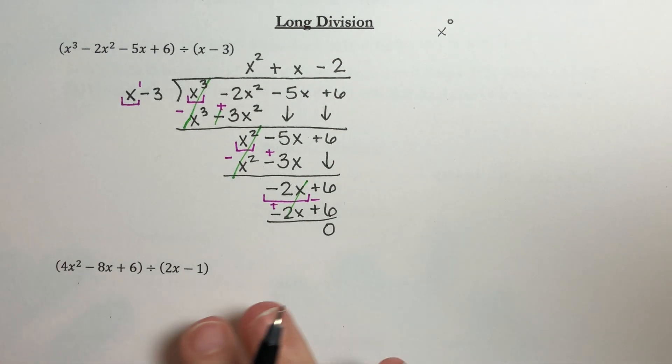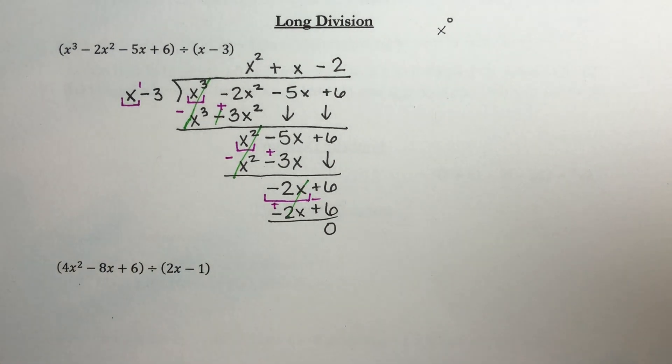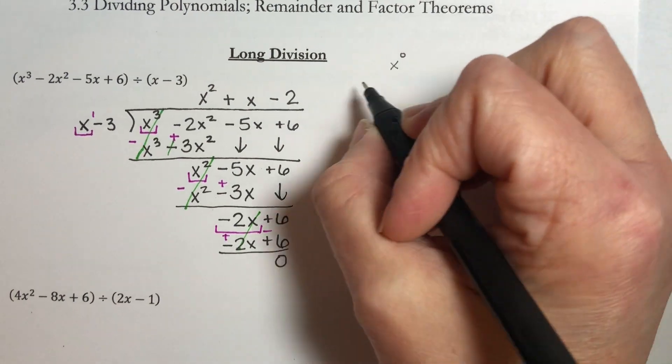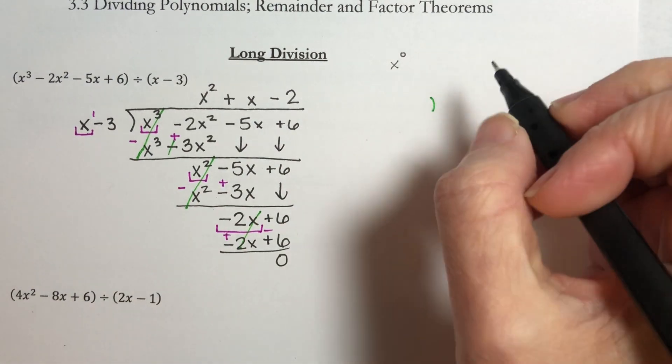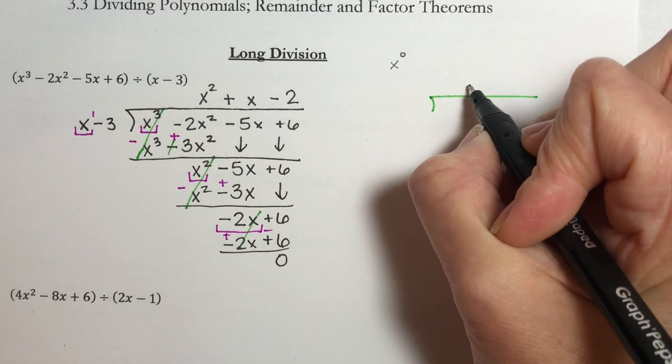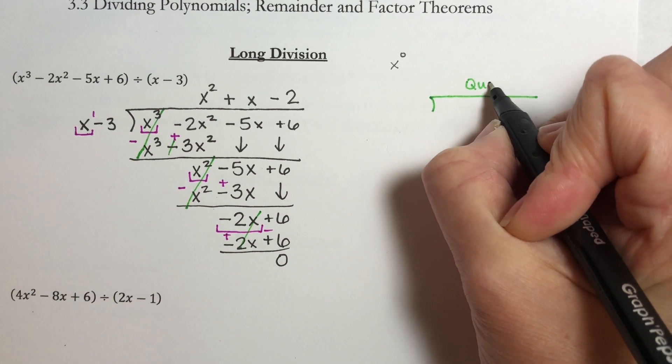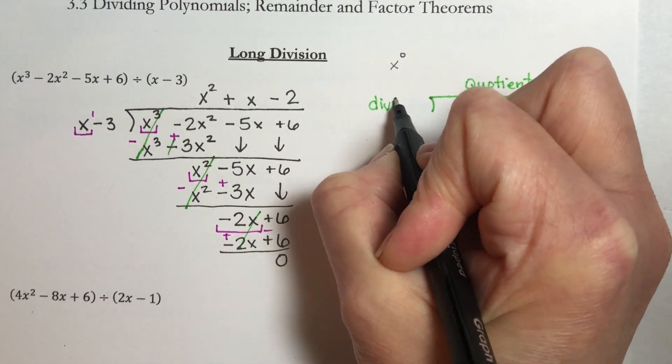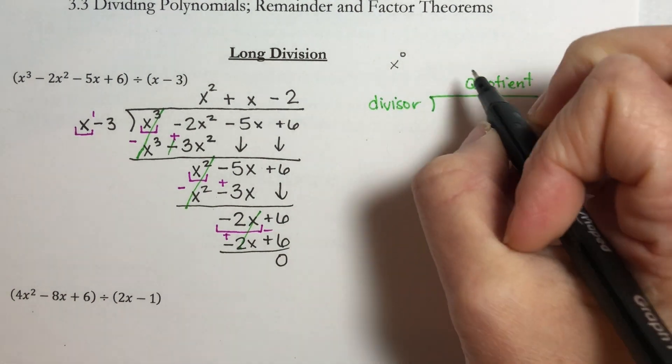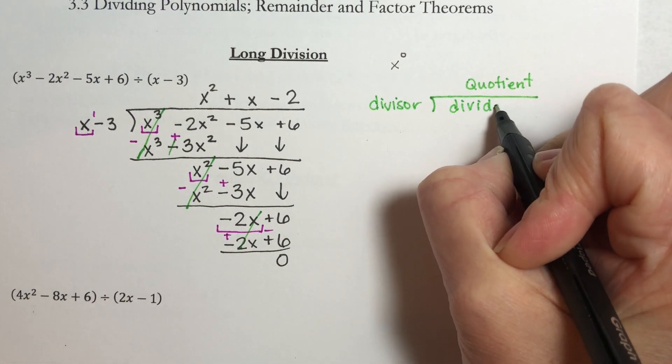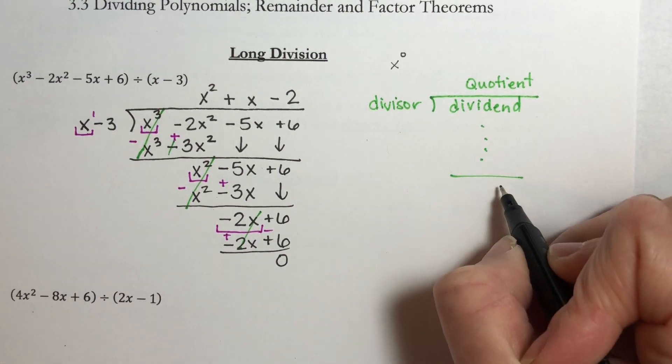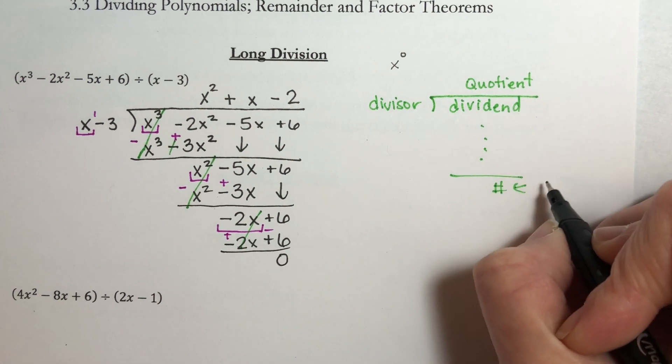So we've done all the work. We just need to recognize our answer. Let's do a little bit of vocabulary. If I have a division, this up here is called the quotient. This is the divisor. This is the dividend. And down here, whatever number you get right here, this is your remainder.